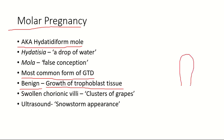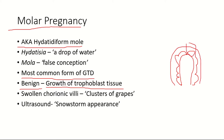There is a chorionic villus surrounded by trophoblastic tissues — cytotrophoblasts surrounded by syncytiotrophoblasts. In molar pregnancy, there is proliferation of these trophoblastic tissues, and also swollen chorionic villi.